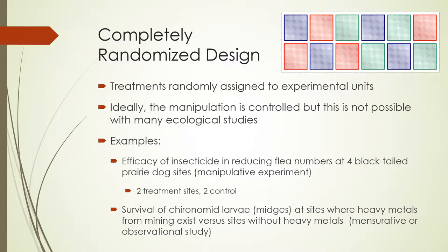An example of a non-manipulative experiment in a completely randomized design: say you have a watershed with streams having no, moderate, or high levels of heavy metal, and you want to see how that influences chironomid numbers. You would identify all streams by category, randomly select from them for your sampling, and measure chironomid abundance — no manipulation, but certainly an appropriate way to address that question.